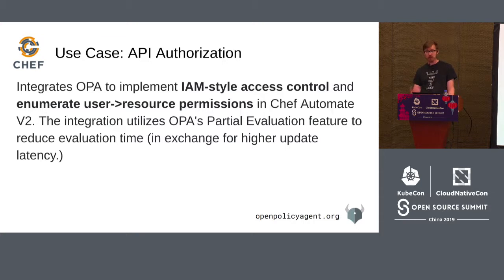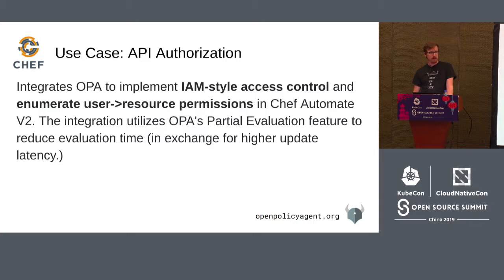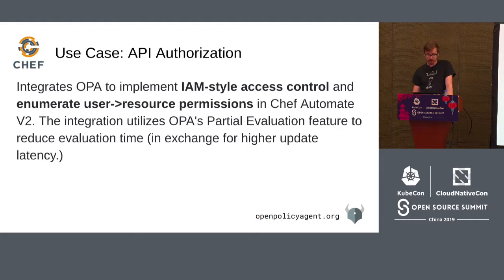Another company using OPA is Chef — an API authorization use case, but different because Chef ships software to enterprises and must deliver IAM functionality with every product. OPA provides an engine and building block that helps them get to market faster — they don't have to reinvent an authorization engine from scratch. With a bit of policy in place, they're able to deliver an AWS IAM-style policy to their customers inside their products. They're also using more advanced OPA features like partial evaluation. It's open source — check out Chef Automate on GitHub to see how they've architected it.